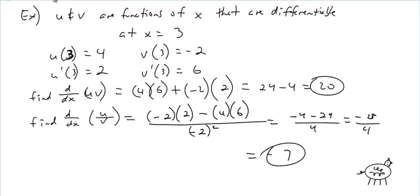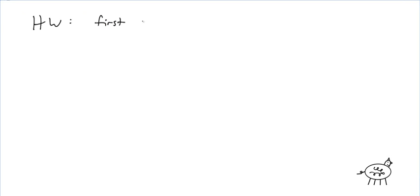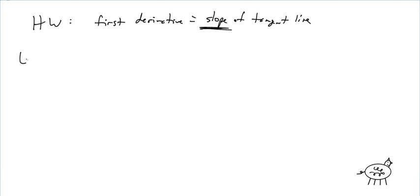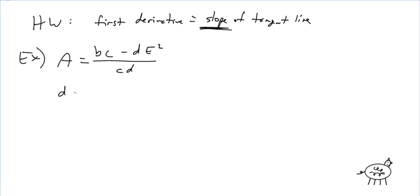Okay, one last kind of problem for your homework. A reminder: the first derivative is the slope of the tangent line — don't forget that.